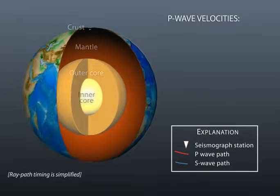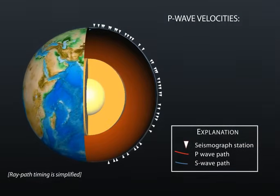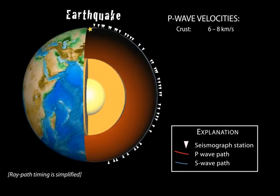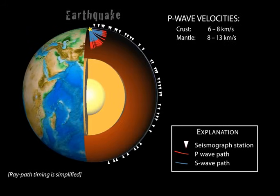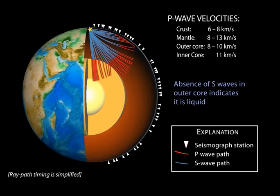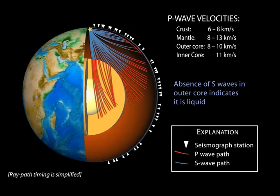How did scientists figure out where these layers were? They used the arrival times of seismic waves to worldwide seismic stations. Seismic waves leave the hypocenter of an earthquake and travel in all directions. If the Earth had no change with depth, seismic waves would travel straight paths, but the Earth has composition, density, and temperature changes that cause the seismic rays to reflect and refract along boundaries as velocity in the mantle generally increases with depth.